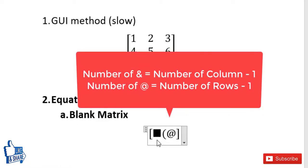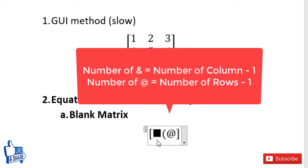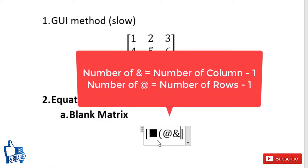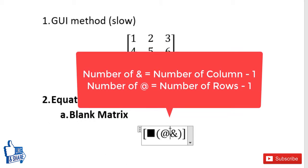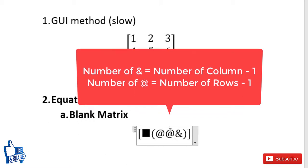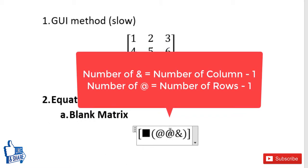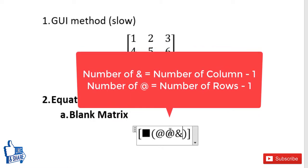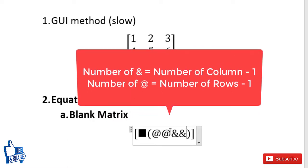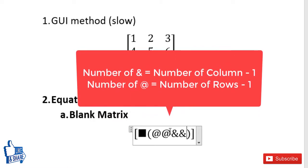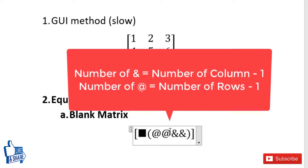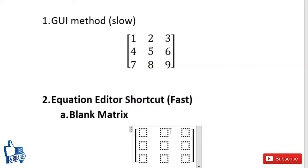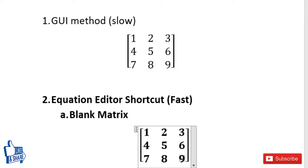The number of rows is specified using the @ symbol, and the number of columns is specified using the & (ampersand) symbol. For example, for three rows put two @ signs — the number of @ signs equals the number of rows minus one. For three columns put two & signs. Once done, press Space to get the empty matrix.